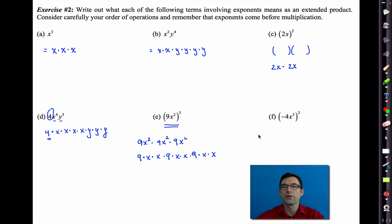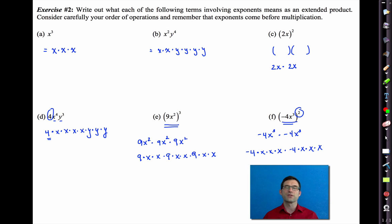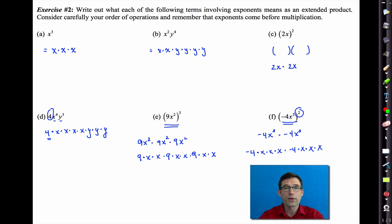And the same idea applies here: we've got negative 4x to the third times negative 4x to the third because we're squaring — that just says take the stuff inside and multiply it by itself once. We could then extend this out as negative 4 times x times x times x times negative 4 times x times x times x, just so we really see what's going on with the repeated multiplication. Keep in mind your order of operations — exponents come before multiplication, unless there are parentheses that supersede it. Pause the video now if you need to.